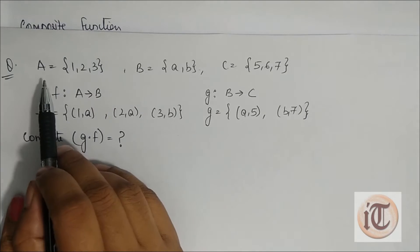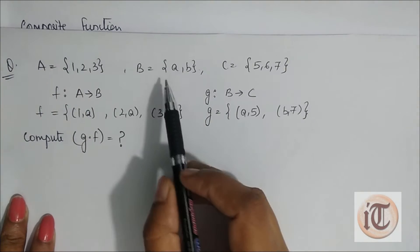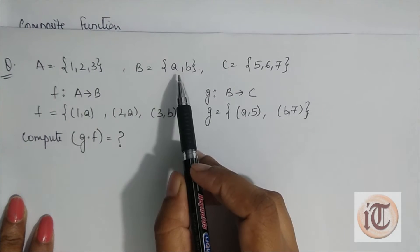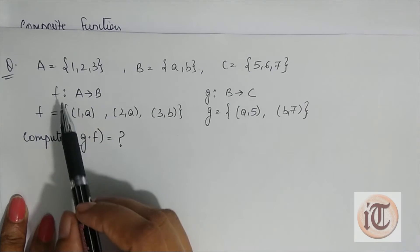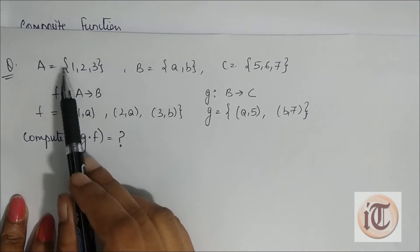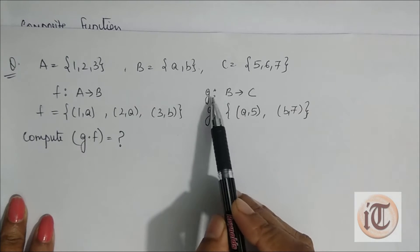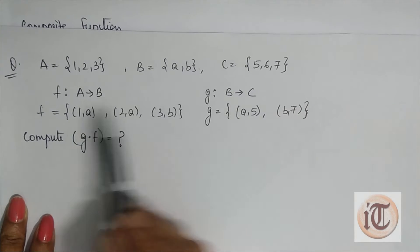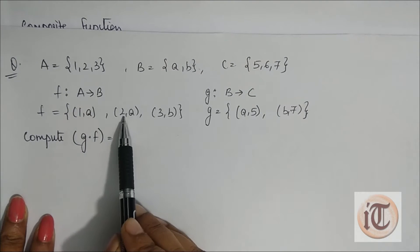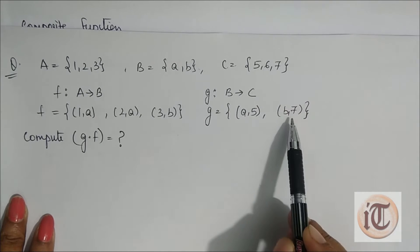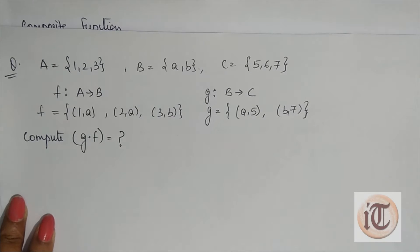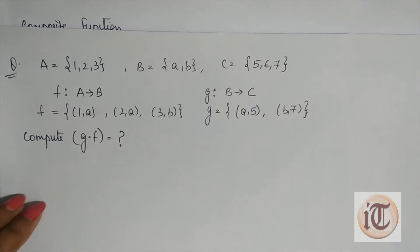Suppose we have set A equals {1, 2, 3} and B equals {a, b}, C equals {5, 6, 7}, and f is a function from A to B and g is a function from B to C, where f equals {(1,a), (2,a), (3,b)} and g equals {(a,5), (b,7)}. Now we have to find the composition of f and g, denoted as g dot f.